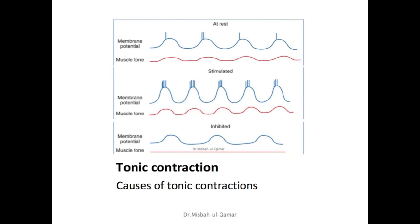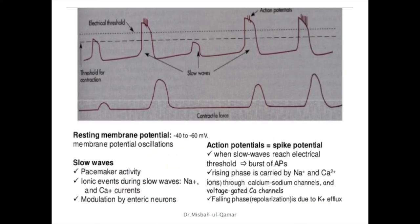Tonic contractions appear in rings or bands of muscles — the sphincters that separate different sections of the digestive system. Examples include the upper and lower esophageal sphincters, which close off the two ends of the esophagus; the pyloric sphincter between the stomach and small intestine; and the sphincter of Oddi, which controls flow of bile and pancreatic juices into the small intestine. This figure summarizes the electrophysiology and contraction of GI smooth muscle.